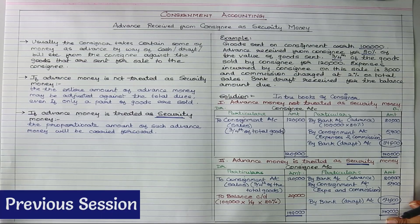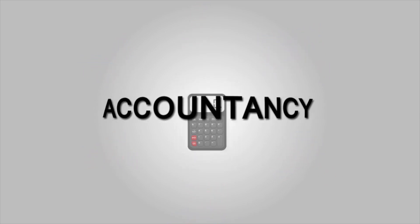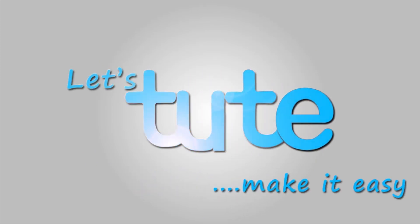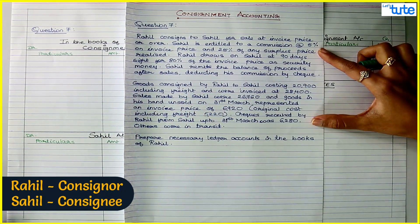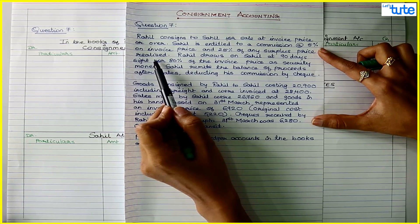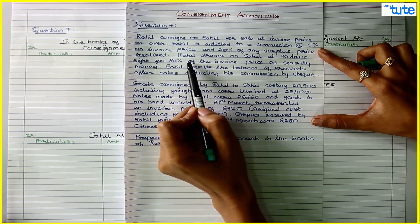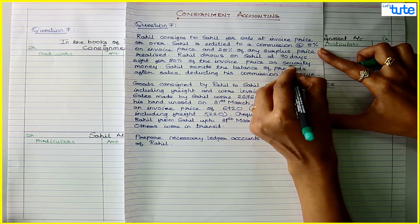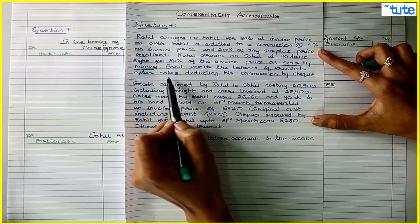Welcome back to Let's Shoot Accountancy. In the previous session we saw the concept of advance received as security money. Now let's apply that concept to this question. Rahil consigns to Sahil for sale at invoice price or over. Sahil is entitled to a commission at 5% on invoice price and 25% of any surplus price realized. Rahil draws on Sahil at 90 days sight for 80% of the invoice price as security money.